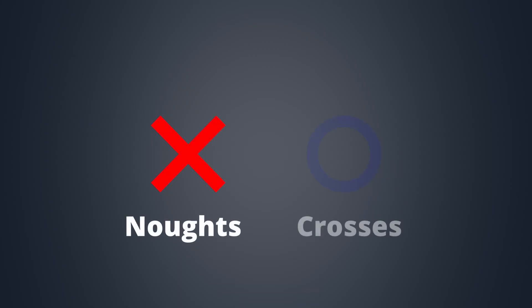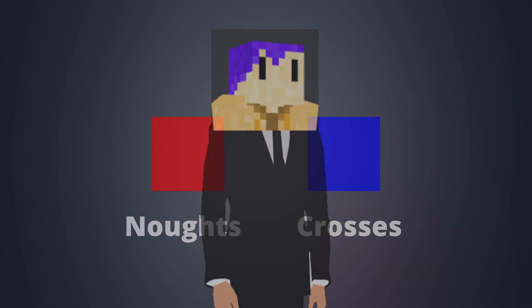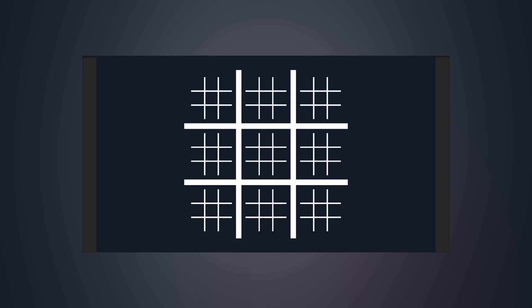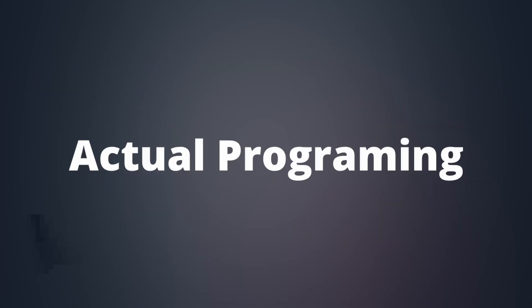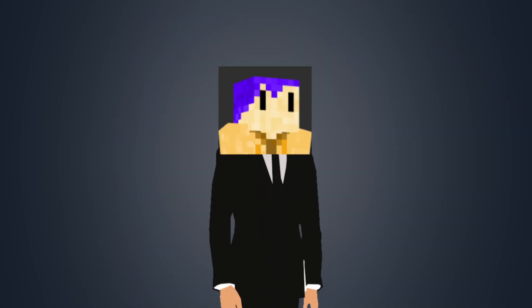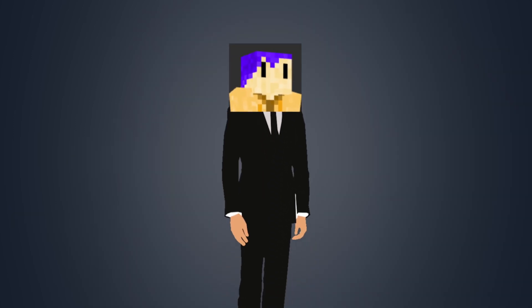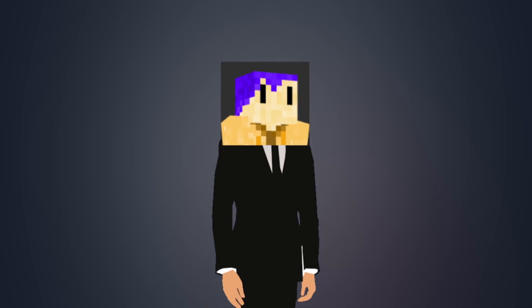The next step was creating the Noughts and Crosses. For now, these are just going to be red and blue squares, but I will change them later when I do all the art. And now that the visual side is done, we can move on to the functional side. I first decided to get a simple game of Noughts and Crosses working on just one grid first, to get an idea of how I would need to adapt it for later.